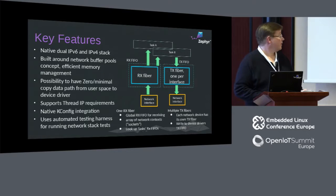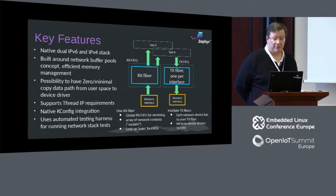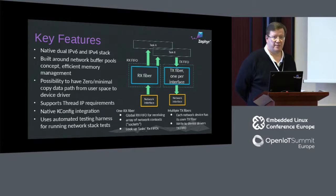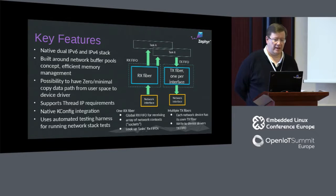The key features in the native stack are: dual IPv6 and IPv4 support, effective memory management, a possibility to have a minimal-copy data path — though this is not always possible, for example IPv6 header compression requires some memory copy. We also support thread requirements, but the stack does not support threads at the moment. Compared to the legacy stack, all configuration can be done via Kconfig — in the legacy stack some config options were required to be changed in a header file. One really important key feature is the utilization of the testing harness.